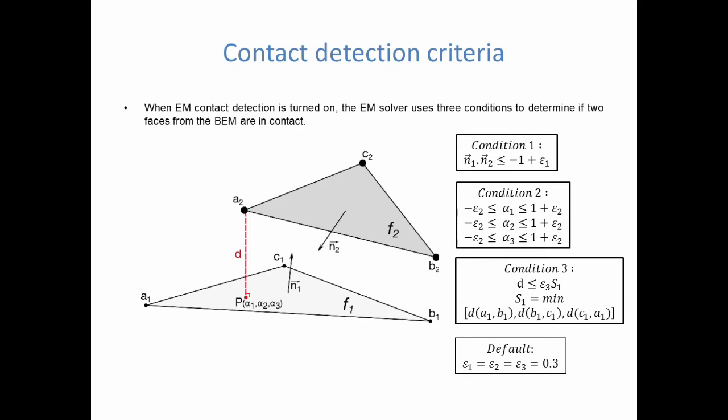Before we mention the keywords needed to trigger the EM contact, a quick word on the conditions for contact used by the EM solver. Basically, there are three things the EM solver is looking at, each with its own tolerance values which the user can change. First, for two faces from the BEM mesh which are divided into triangles, the solver checks if the normals are sufficiently aligned, if the corners of one element fall into the other element, and finally if they are close enough.